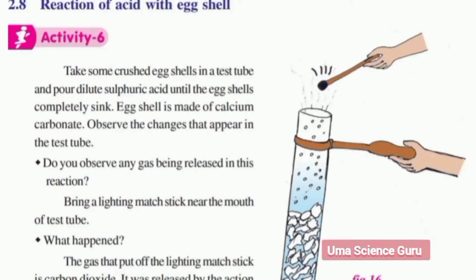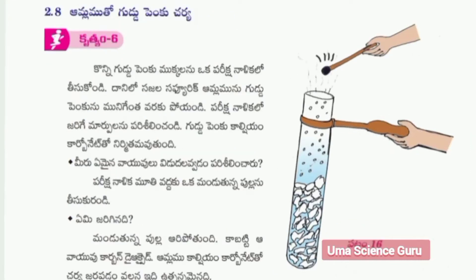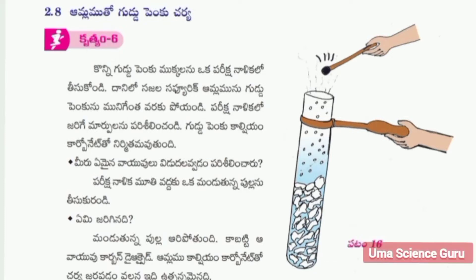Hi students, welcome to Umma Science Guru. Let us do a simple experiment: the reaction of acid with eggshells. This is Lab Activity 6 in our seventh class General Science, second lesson: Nature of Substances.